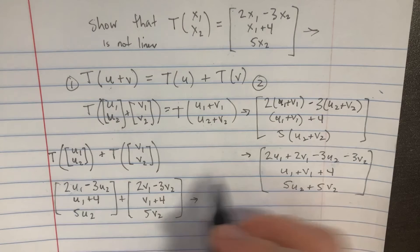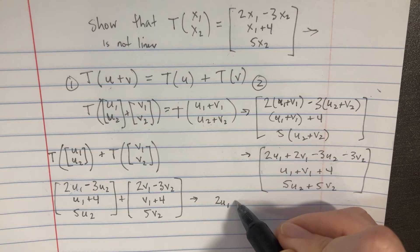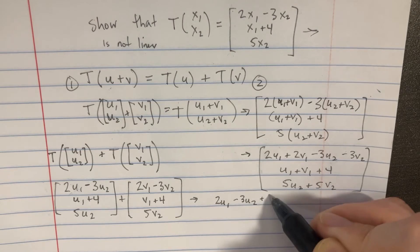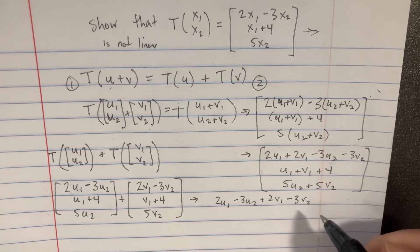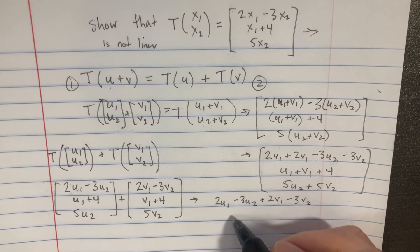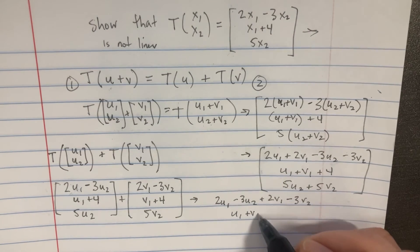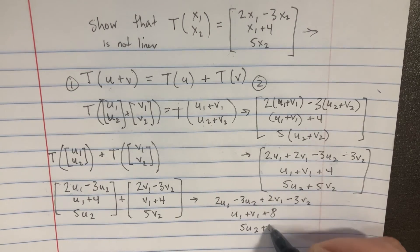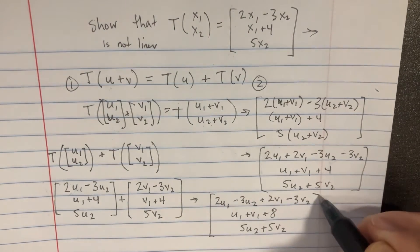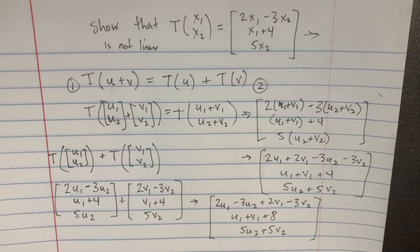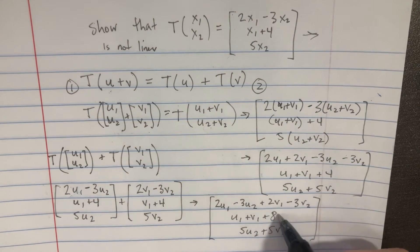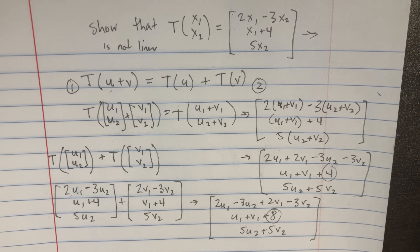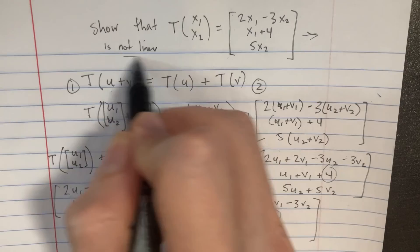So this would be something like two U1 minus three U2 plus two V1 minus three V2, and then we have U1 plus V1 plus eight, and then we have five U2 plus five V2. So we can see how if we do that, we actually have some differences between these two, and so therefore this is not going to be a linear transformation.